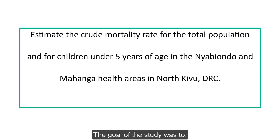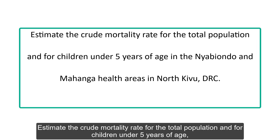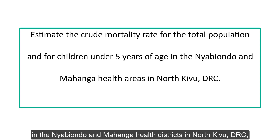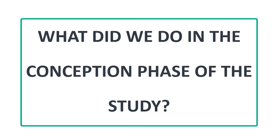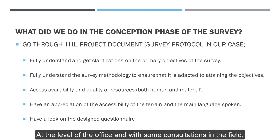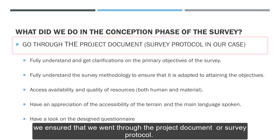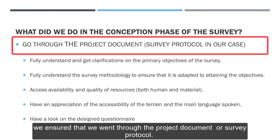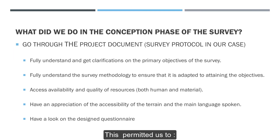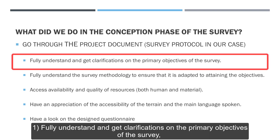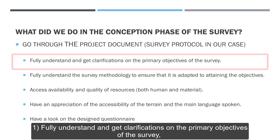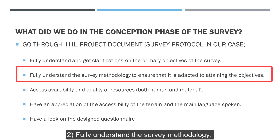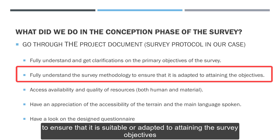The goal of the study was to estimate the crude mortality rate for the total population and for children under five years of age in the Nyabiondo and Mahanga Health Districts in North Kivu, DRC. At the level of the office and with some consultations in the field, we ensured that we went through the project document or survey protocol. This permitted us to fully understand and get clarifications on the primary objectives of the survey, and to fully understand the survey methodology to ensure that it is suitable or adapted to attaining the survey objectives.